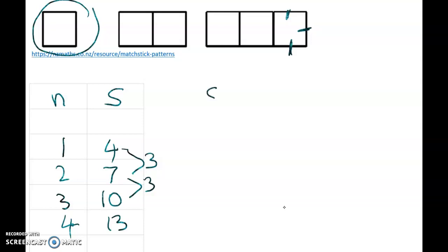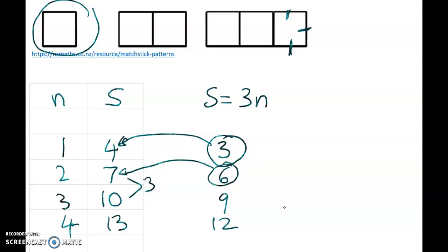So what will my rule be? Well the first part of the rule that I'm going to try is a rule that says I'm going up in threes. So let's try our three times table. So s is equal to 3n. What does that give me? Three ones are three, three twos are six, three threes are nine, three fours are twelve. I've got three, but I want to have four. I've got six, but I want to have seven. So what do I have to do? Well, I've got to add on one.